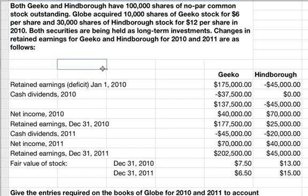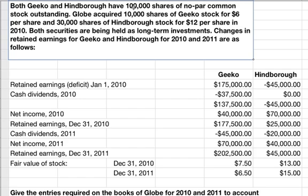Before we even start this problem, one thing to notice is that 10,000 shares of 100,000 is 10%, and since it's being held as a long-term investment, that would qualify this as an available-for-sale security. But for Hindborough, Globe bought 30,000 shares, and 30,000 of 100,000 is 30%, so this is going to be held as an equity security for Globe. These two things are accounted for differently, and that's obviously what this problem is about.